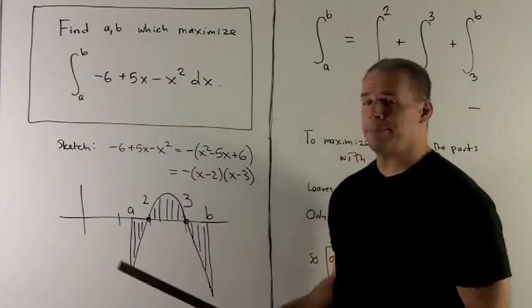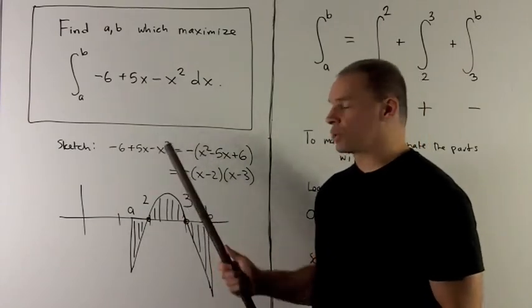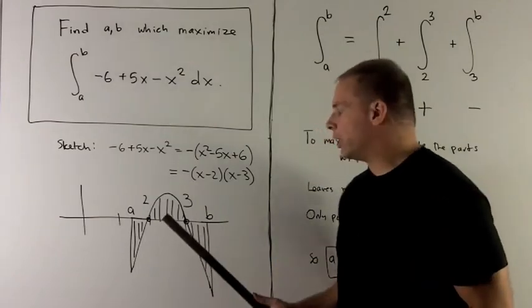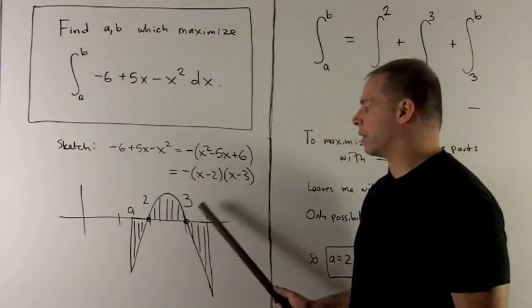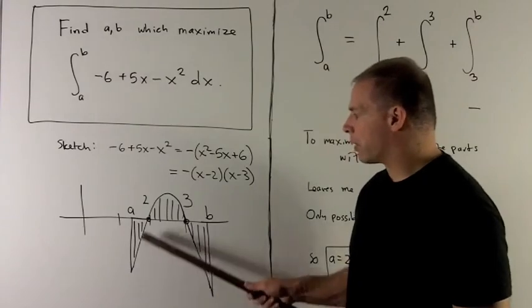So we have a parabola. There's a minus sign in front of the x squared, so it's going to face down. And we know it's going to intercept at 2 and 3. So this is our parabola.